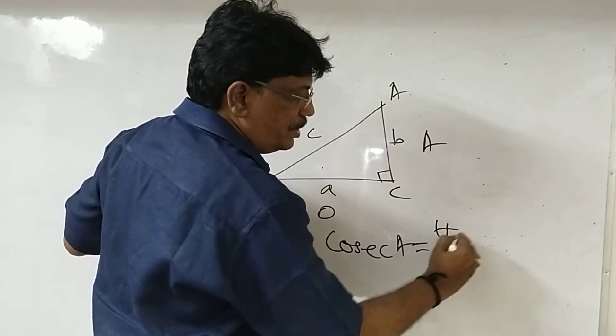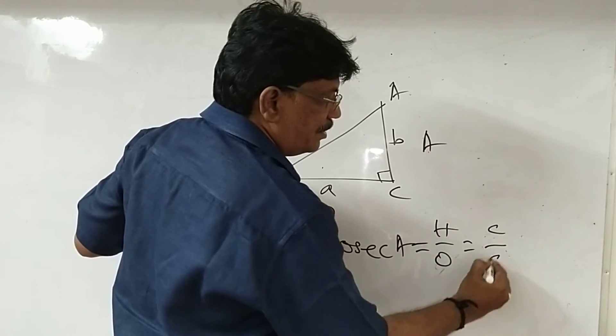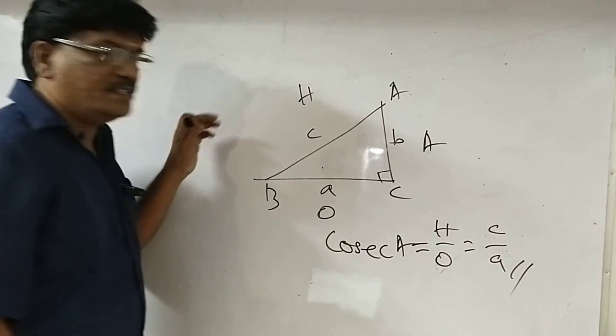Now cosecant is hypotenuse by opposite. Hypotenuse is C, opposite is A, so C by A. This is the answer, C by A.